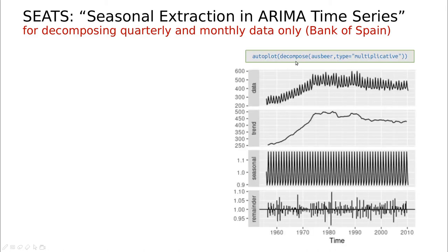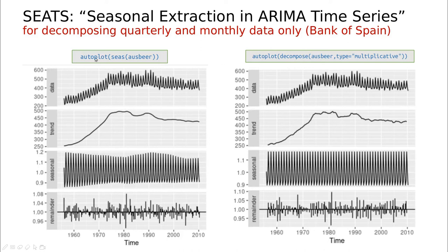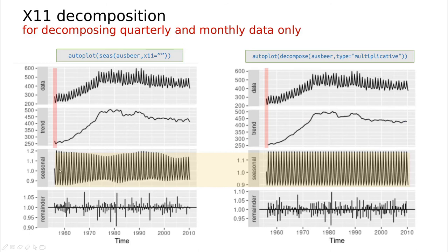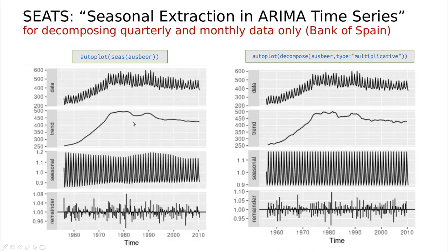Let's compare the multiplicative decompose with SEATS. You can see that again we have modulation in the seasonal component, and now we have a smoother trend line. Going back to X11, the price we paid for including seasonal modulation was a noisier trend signal. With SEATS we don't have that — the trend is smoother. But the problem is that we have back some correlation in the residuals, with clustered predictions. So we've gained something in terms of the trend but lost something in terms of correlation.